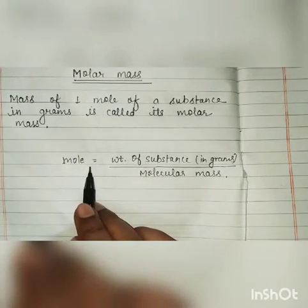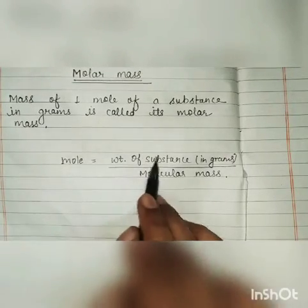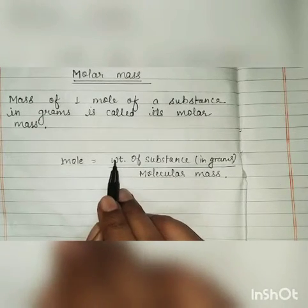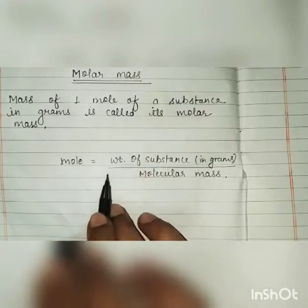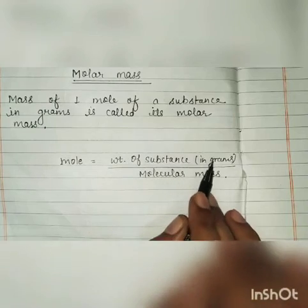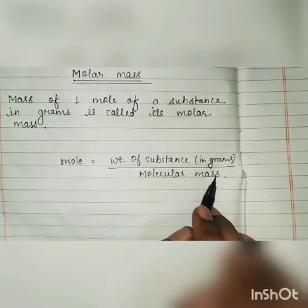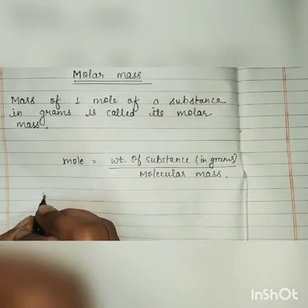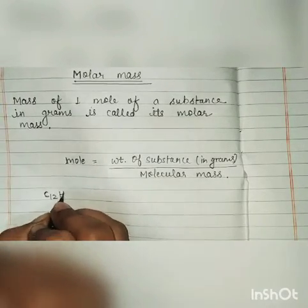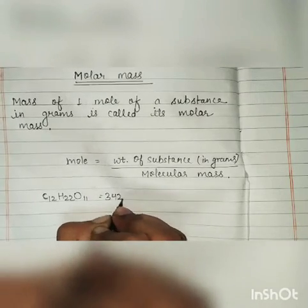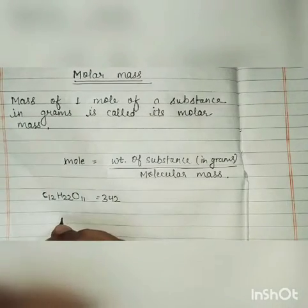To calculate the number of moles, we have the formula: weight of substance in grams divided by molecular mass. For example, when you go to the market and ask for 1 kg of sugar, 1 kg is the mass of substance. The molecular mass of sugar can be calculated using the formula C12H22O11, which is equal to 342.